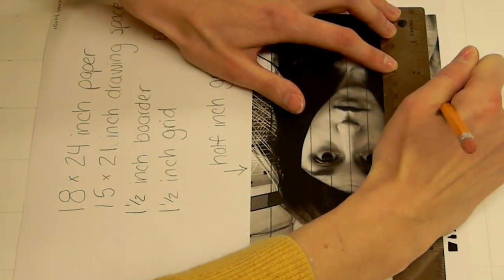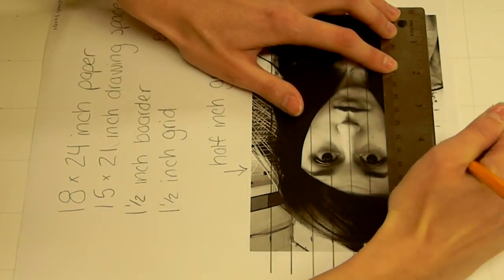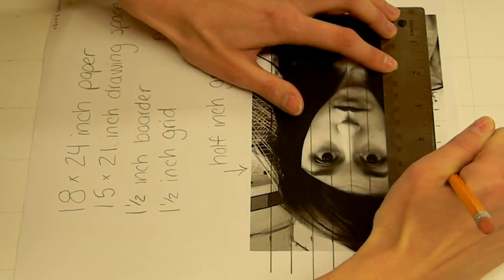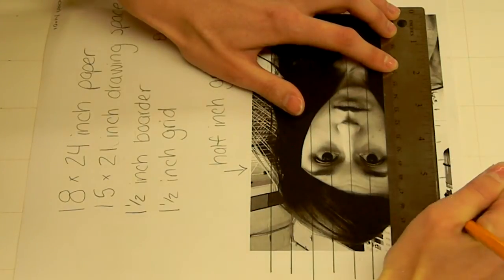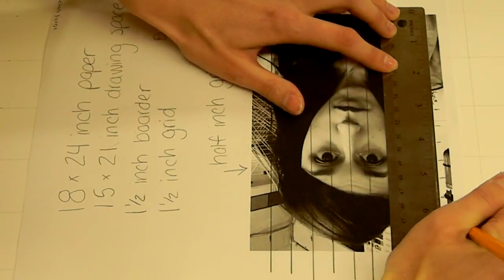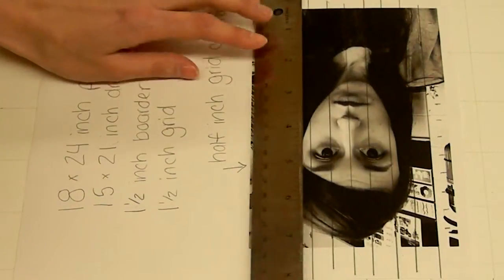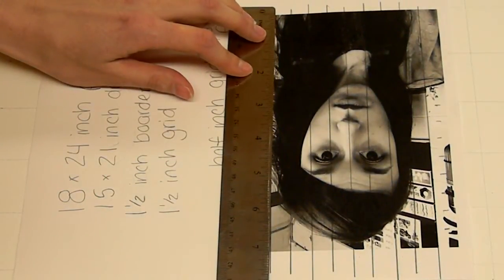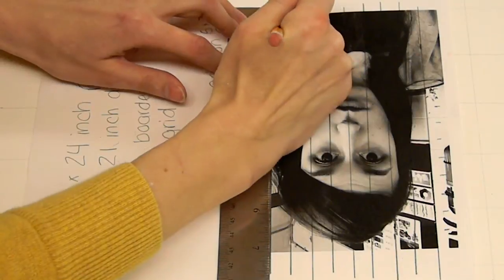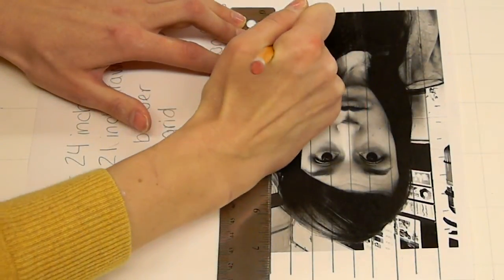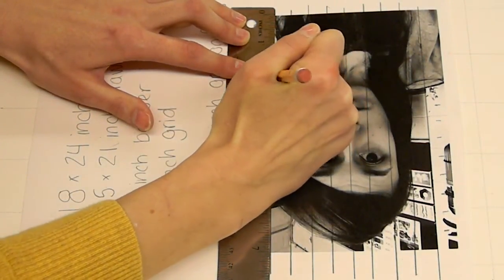If you want to go over this with pen or marker afterwards you can. Just make sure it's fairly thin so you're not blocking any major details on your face. Then I'll go in from the other side and do the same thing, starting at zero and making a tick mark every half inch.